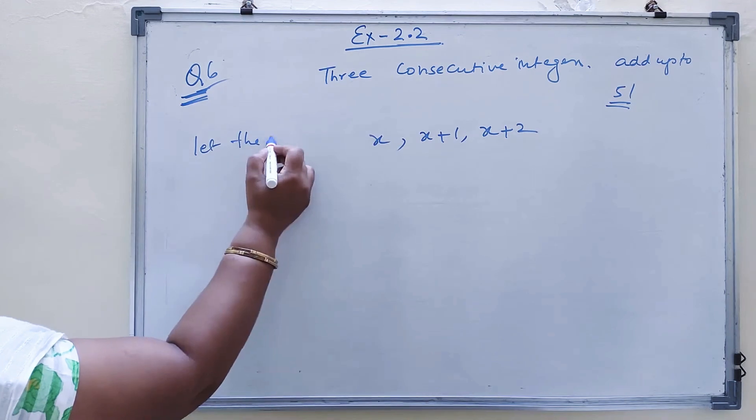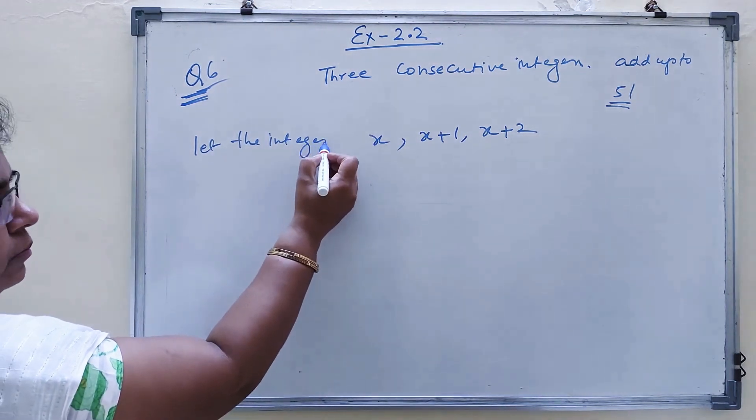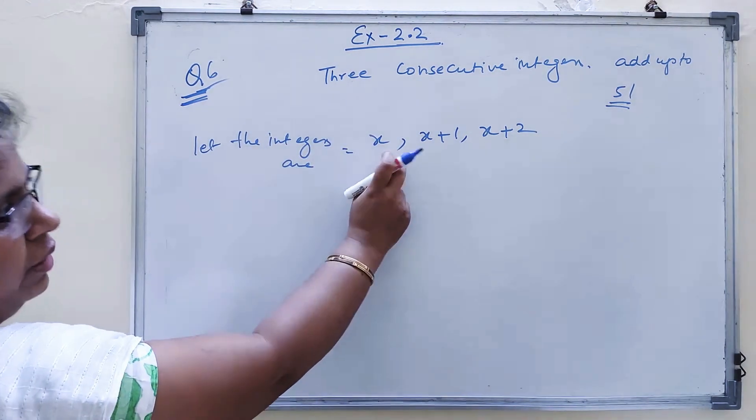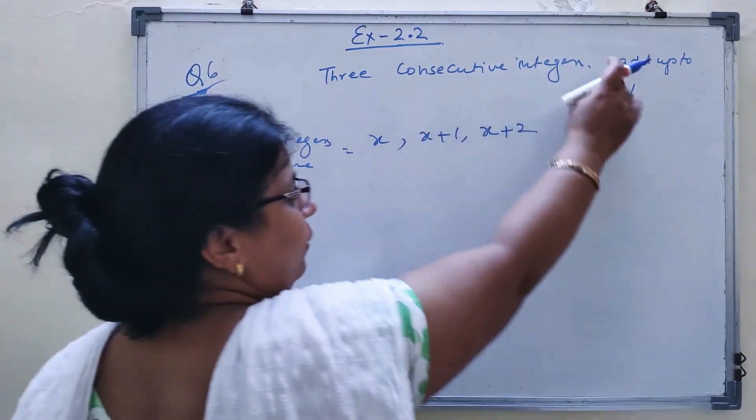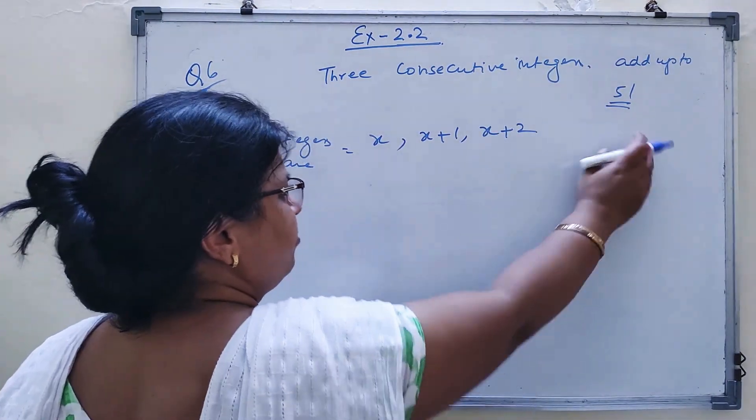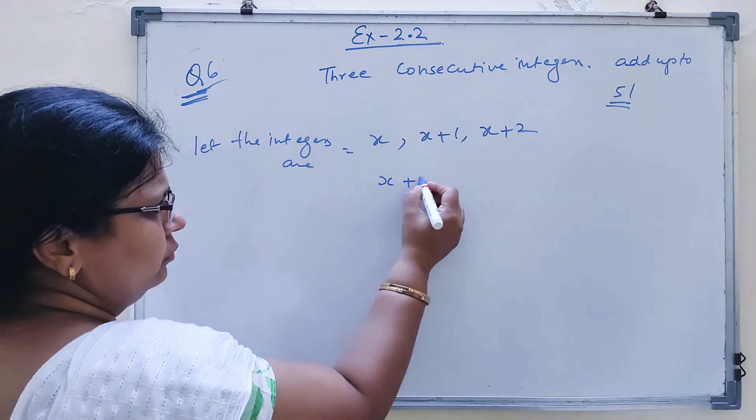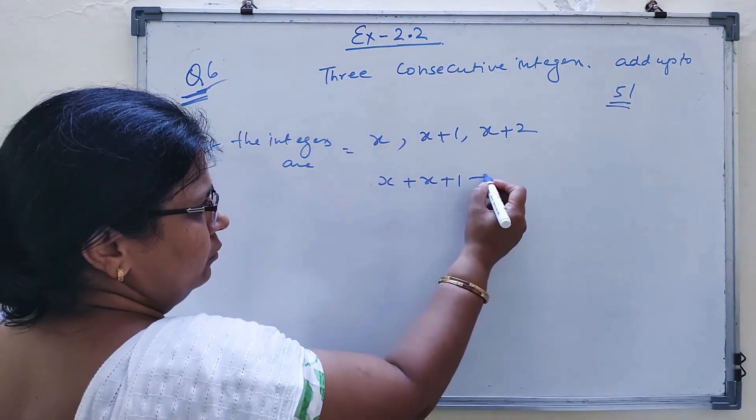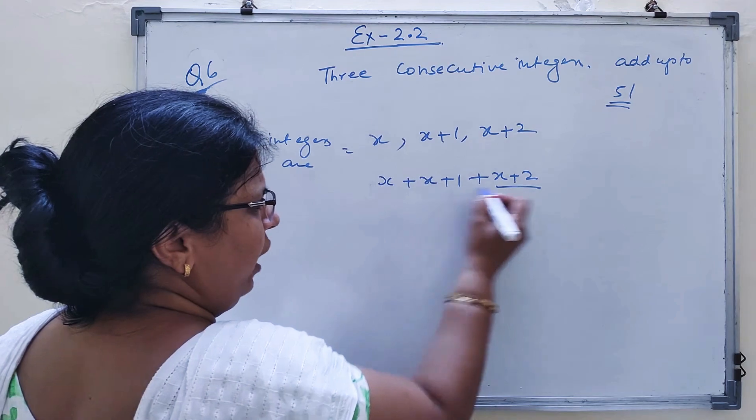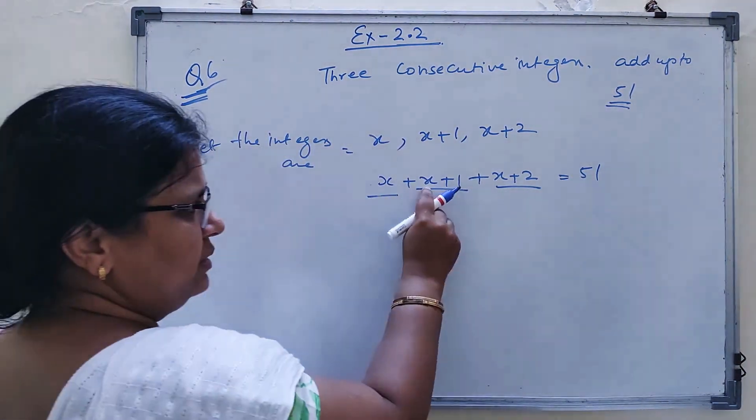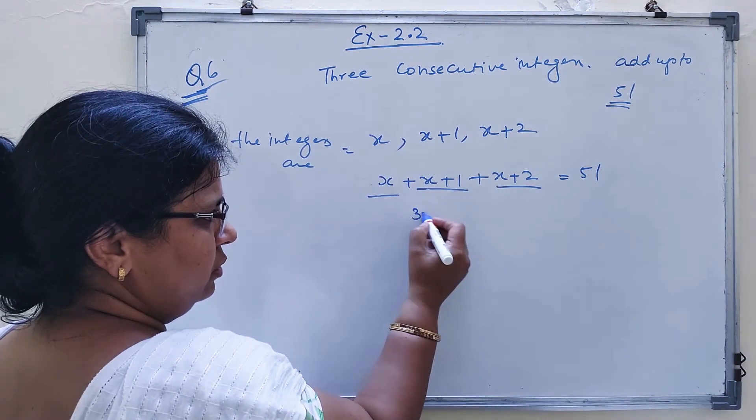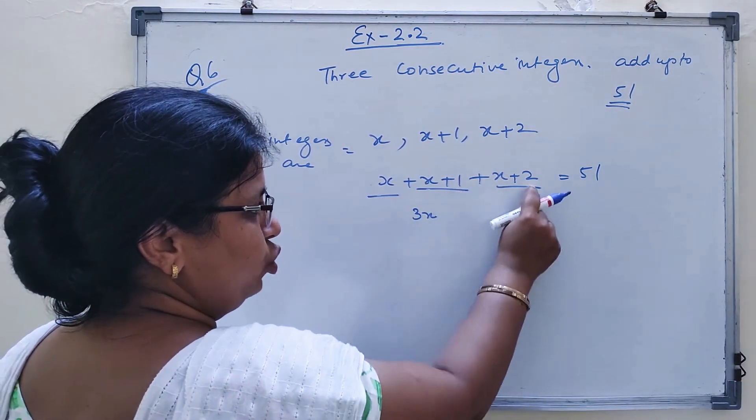Let the integers are x, x plus 1, x plus 2. They add up to 51, meaning their sum is 51. If you add all three, it equals 51. This is the equation.